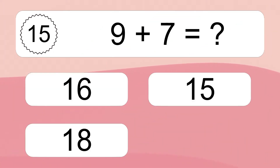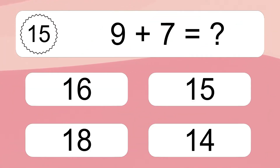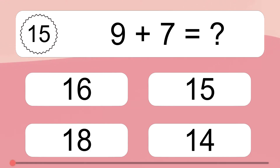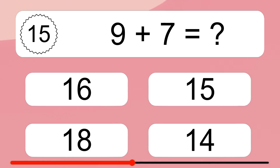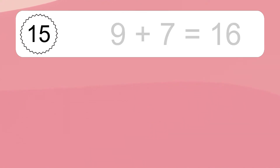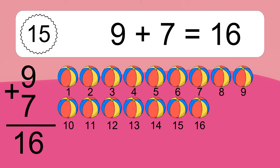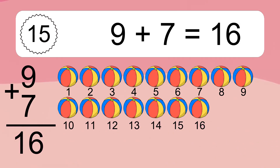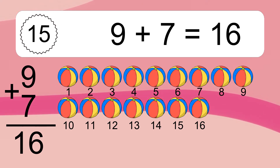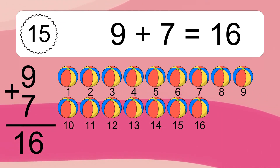9 plus 7 equals what? 9 plus 7 equals 16. Let's count it: 1, 2, 3, 4, 5, 6, 7, 8, 9, 10, 11, 12, 13, 14, 15, 16.